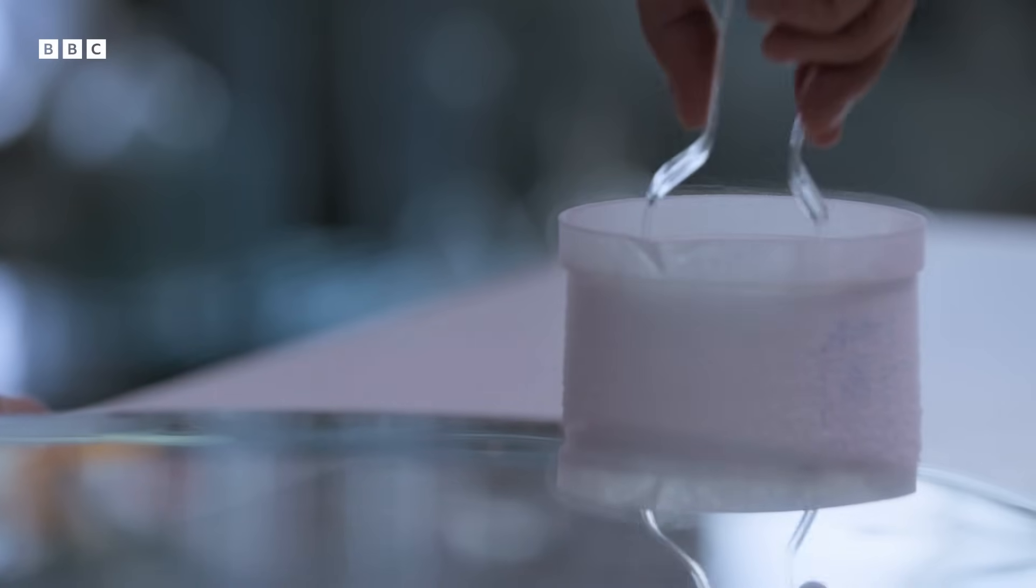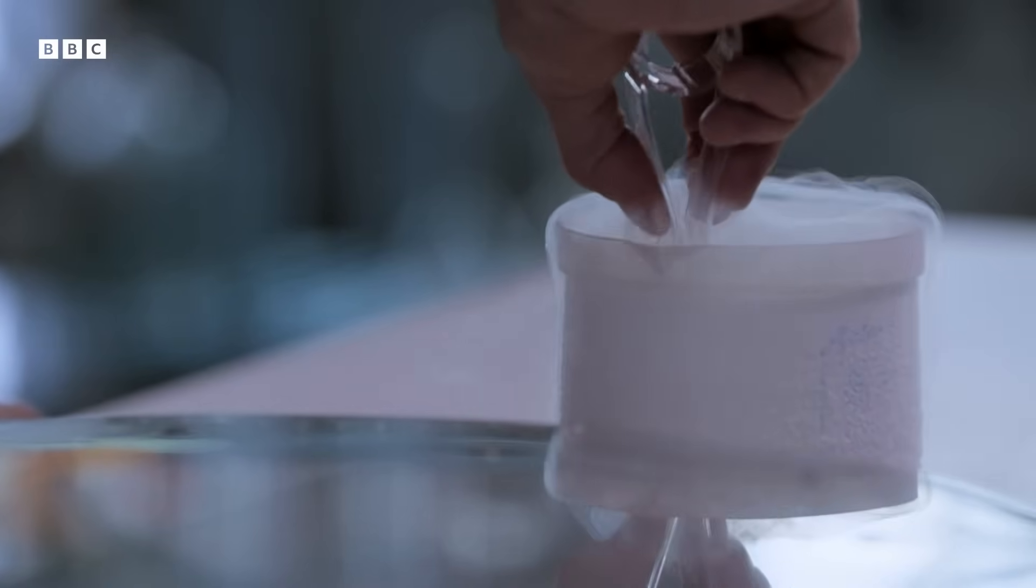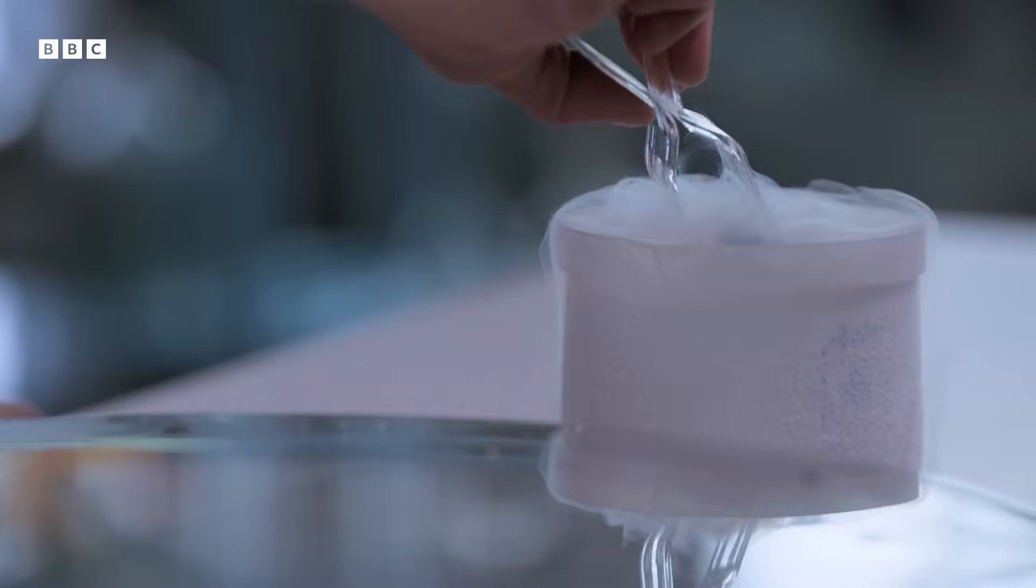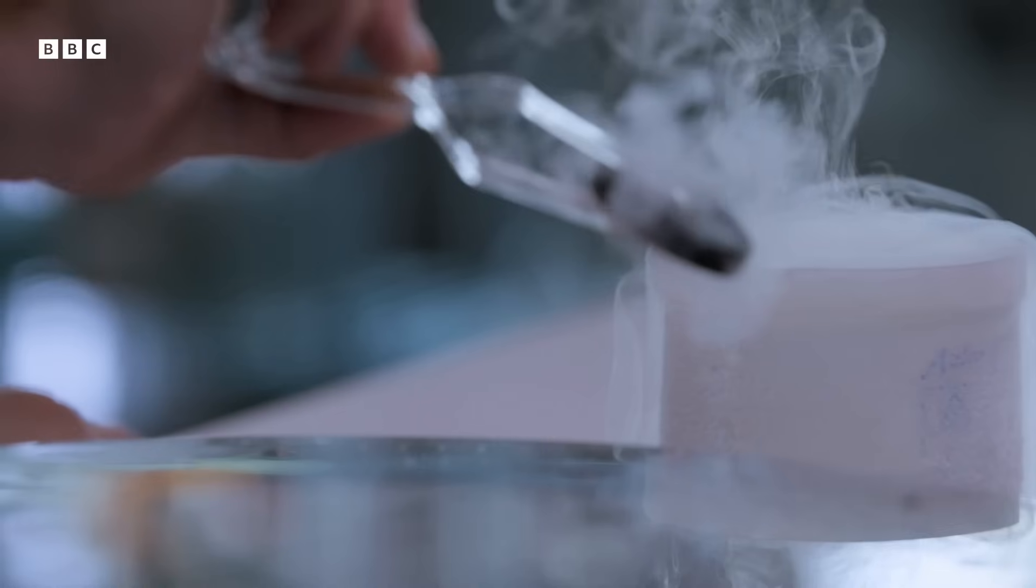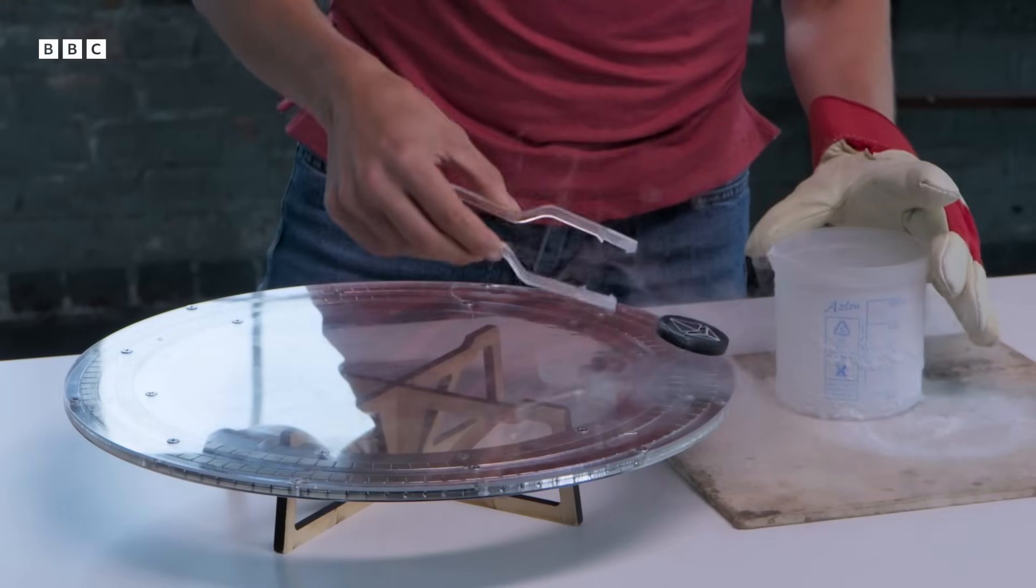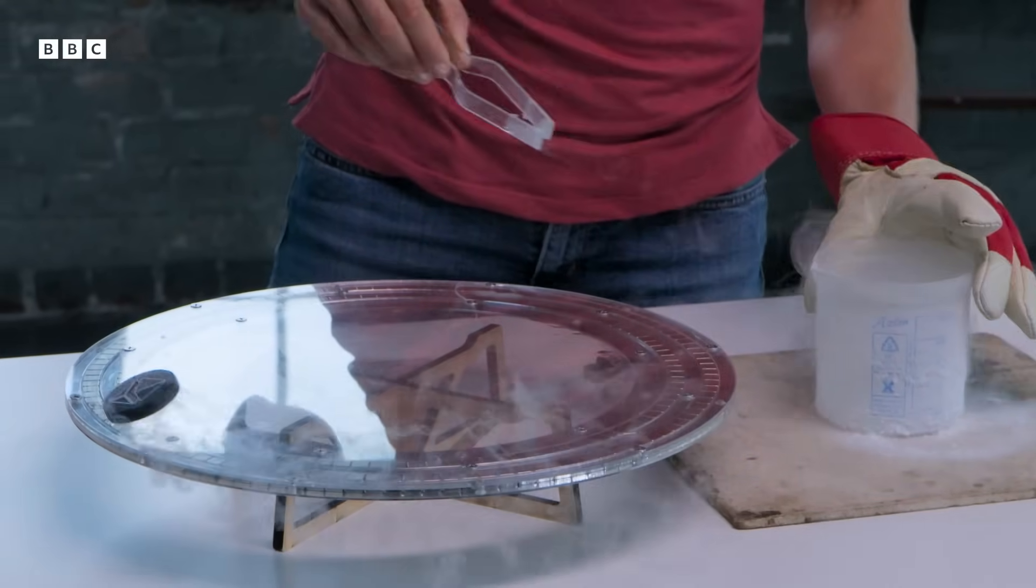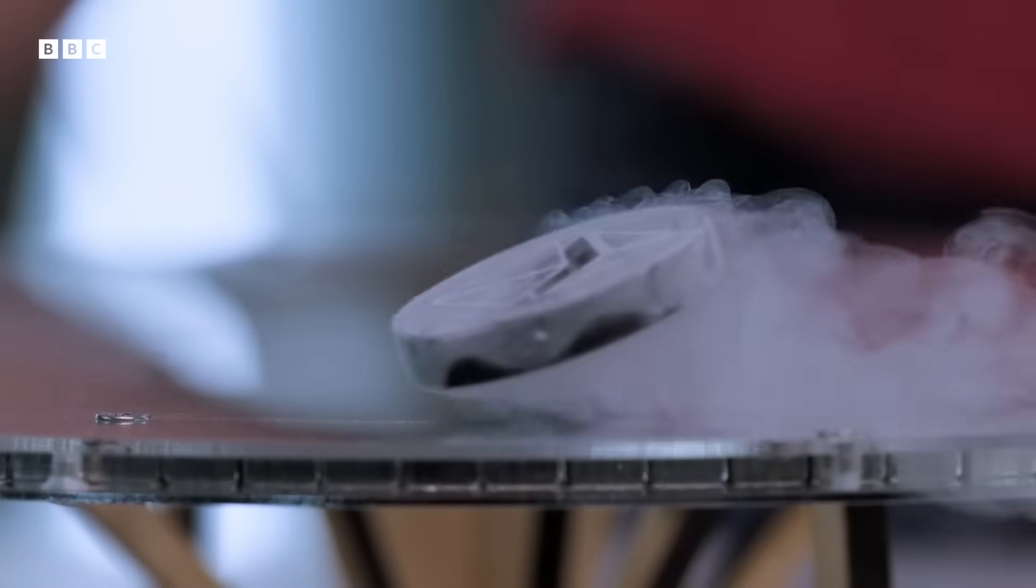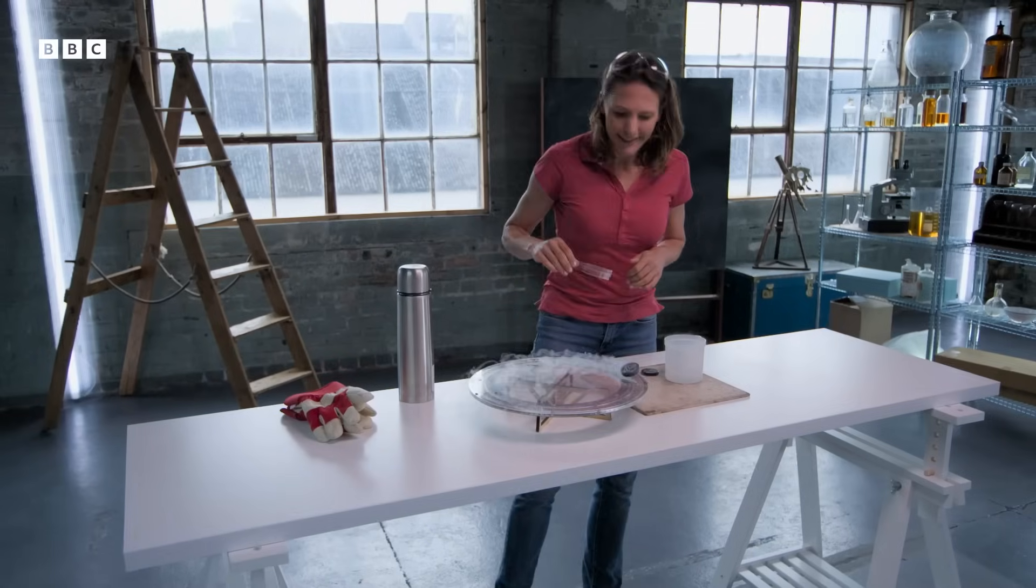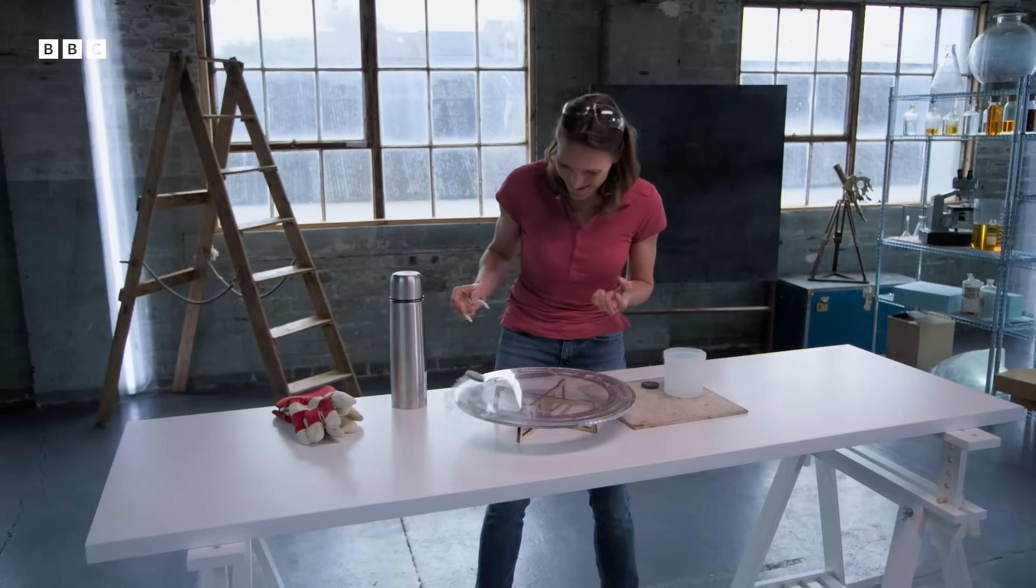Using liquid nitrogen we're reducing the temperature of the disk to minus 196 degrees Celsius. And now when I bring it close to the magnets something unexpected happens. It's levitating and it will scoot around on the little track here for quite a while. So something's changed. We've cooled it down, the behavior changed completely.